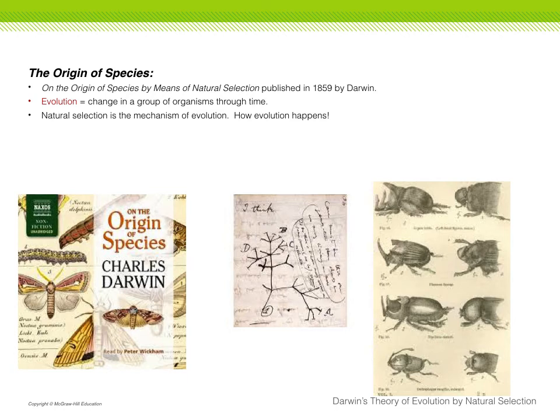In 1859, Darwin published On the Origin of Species by Means of Natural Selection — the book where he laid out how evolution works. Evolution is a change in a group of organisms through time, and natural selection is the mechanism of evolution; it's how evolution happens.